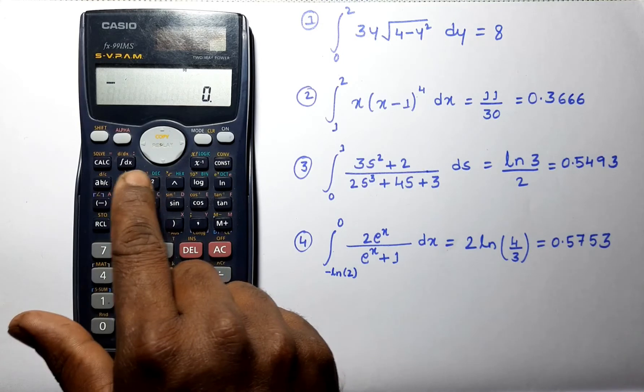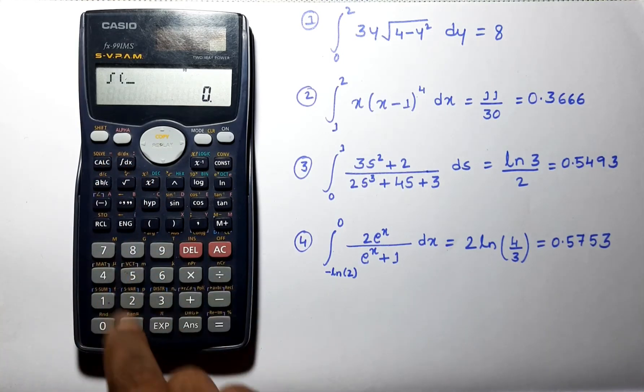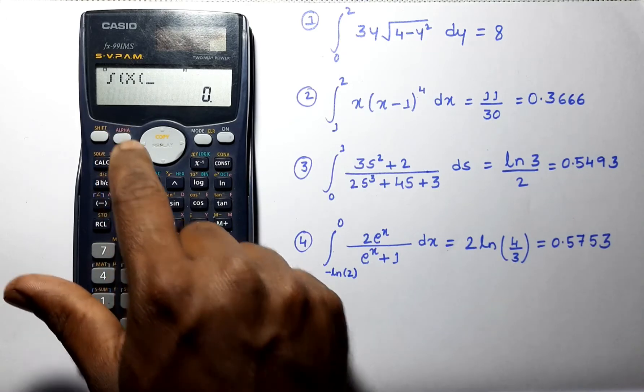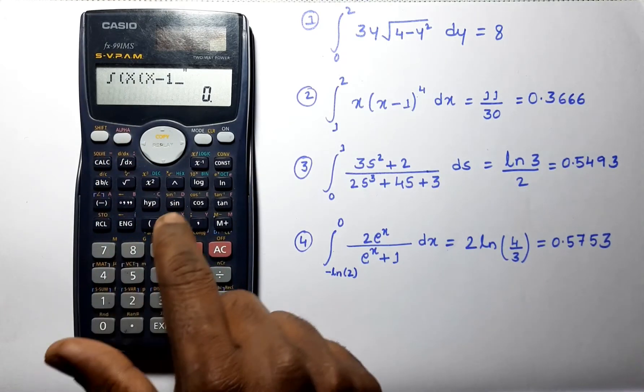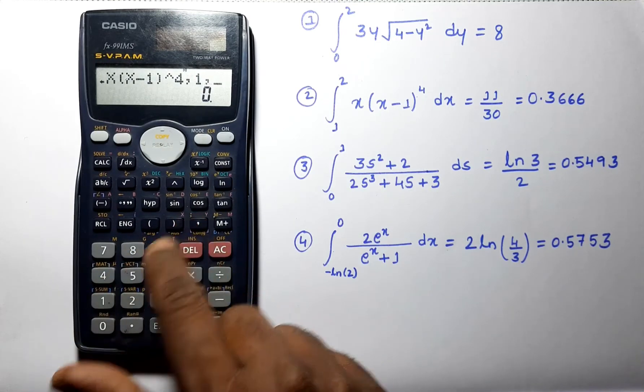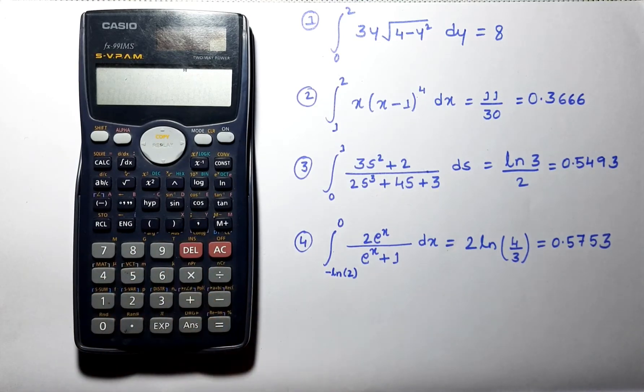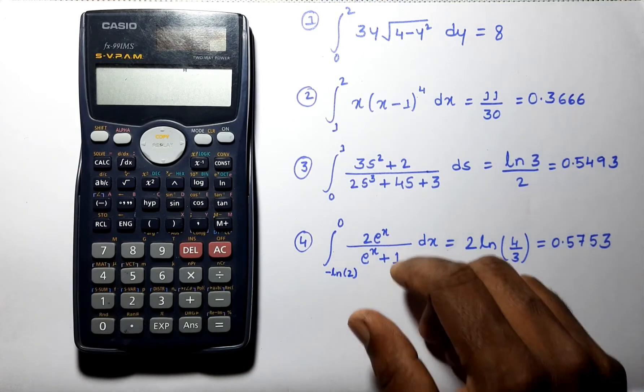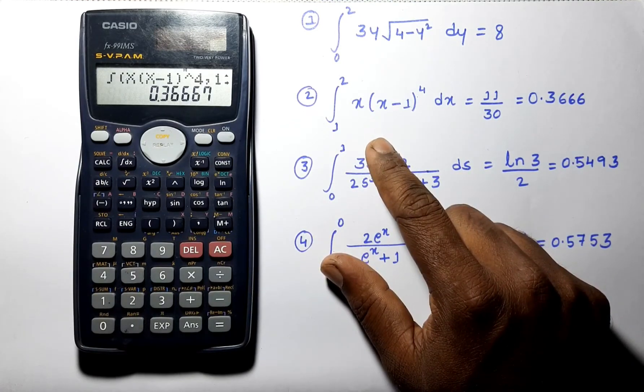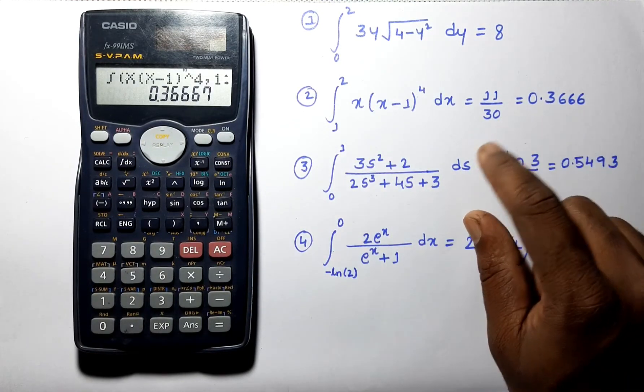Let us solve next problem now, which is integral of x into x minus 1 power 4, and the limit varies from 1 to 2. This kind of problem is generally done using substitution method, but using calculator we can solve them in few seconds.